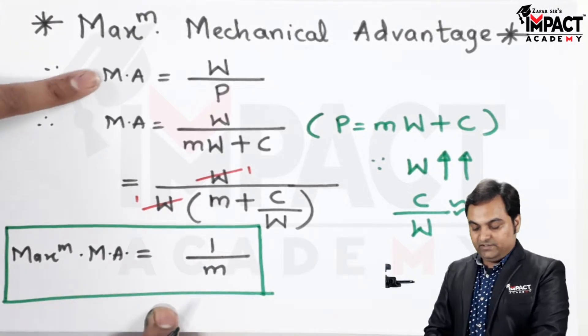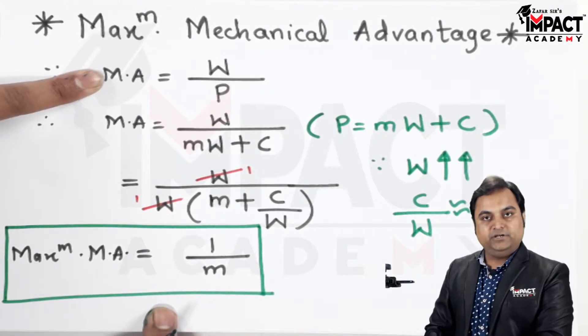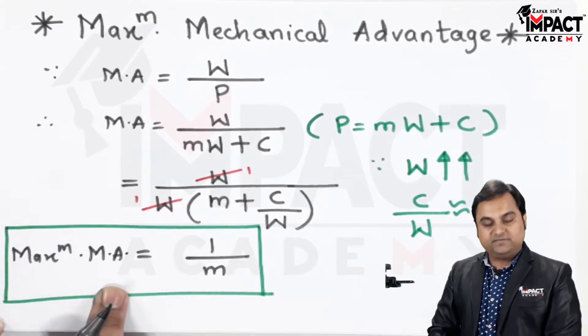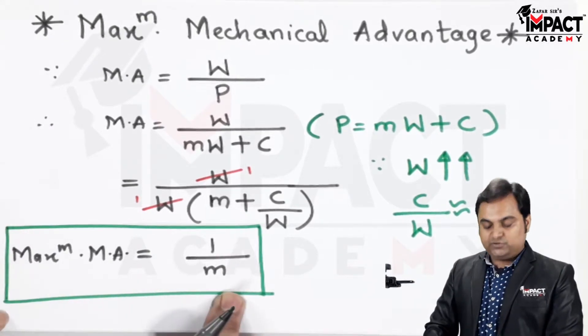And when we compare, here is the actual mechanical advantage, which would be having lesser value compared to this maximum mechanical advantage, which is 1 upon M.